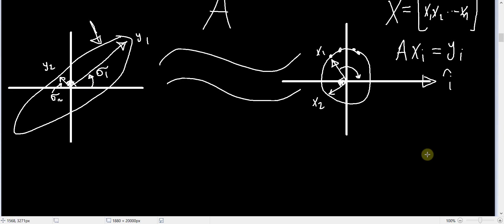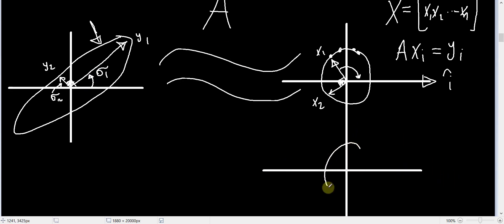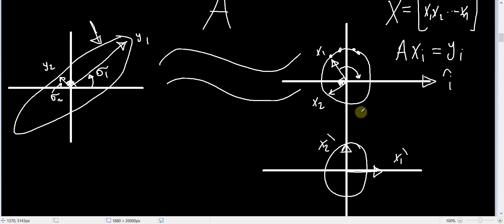So the first step is we do this first rotation, and we will still have some circle, but right now this x1 got transformed into here — let's call this x1-dash — and this is x2-dash. So this is after the first rotation. Since this rotation is a clockwise rotation, we can say that this rotation can be achieved using a rotation matrix, and let's call it V transpose, because our convention is that a clockwise rotation has a transpose in its rotation matrix.